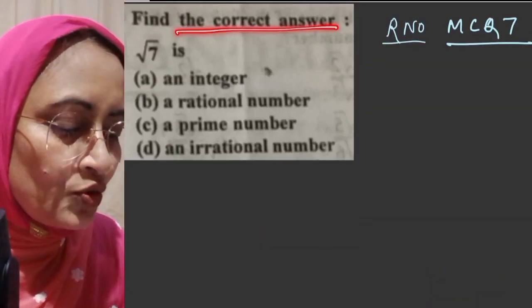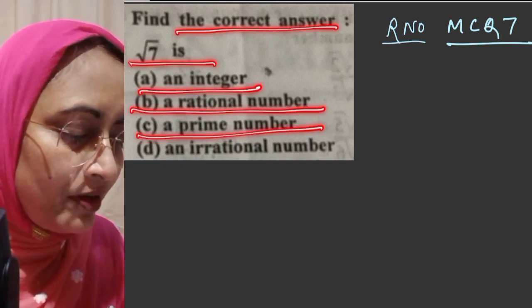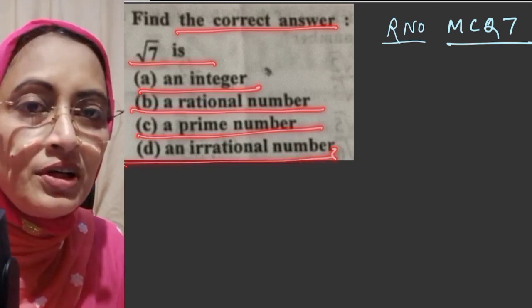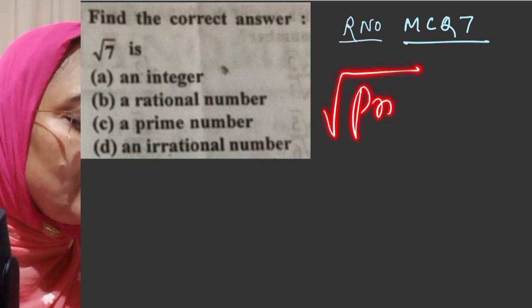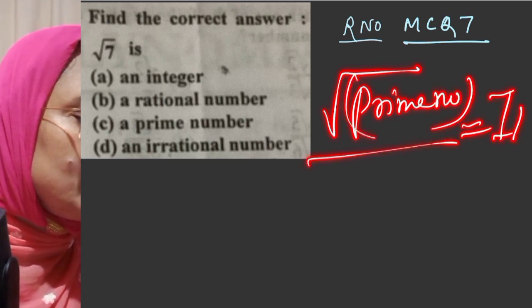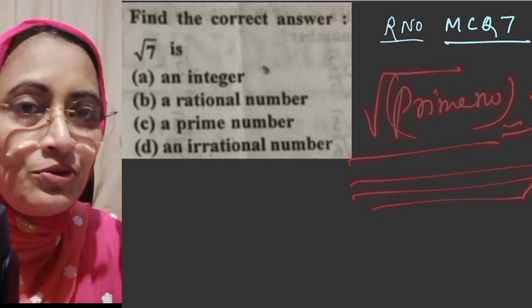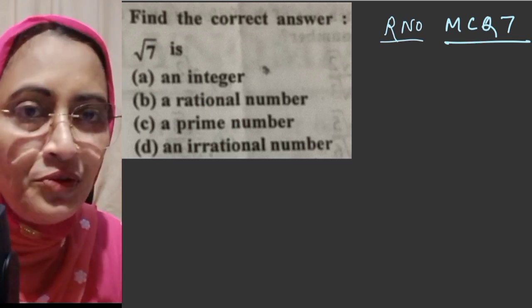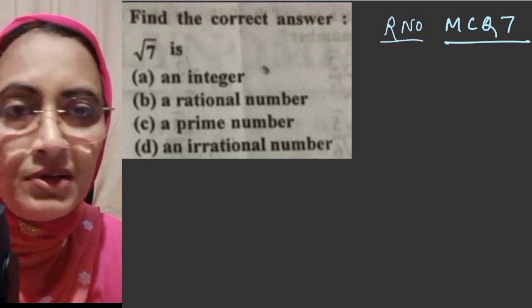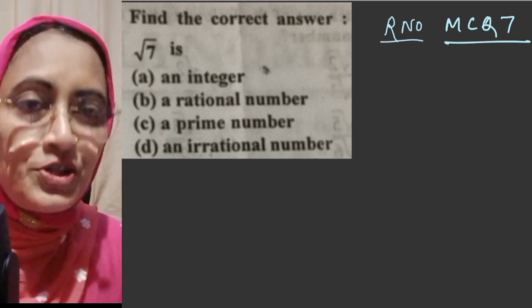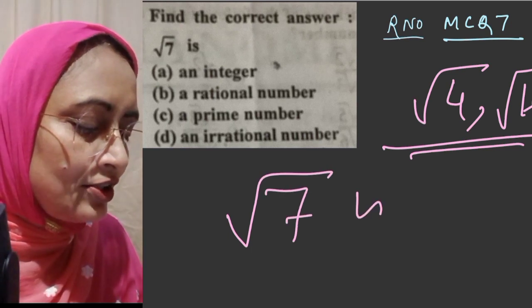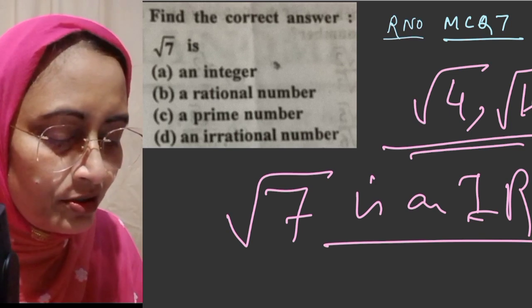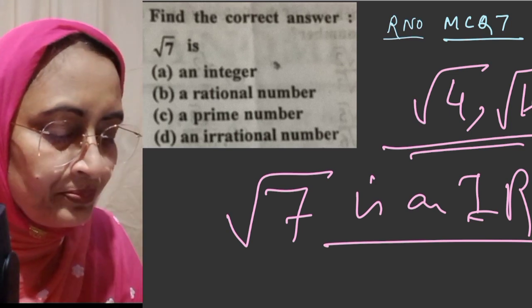Question number 7: find the correct answer — root 7 is an integer, rational number, prime number, or irrational number? Root 7 is not an integer. It cannot be rational because for a square root to be rational the number must be a perfect square, and 7 is not a perfect square — it is a prime number. Therefore root 7 is an irrational number. The correct option is D.